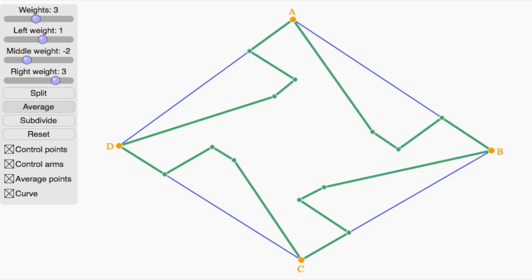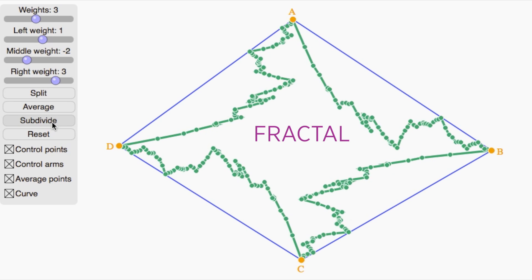As I keep subdividing, the curve gets less and less smooth. It's something called a fractal.